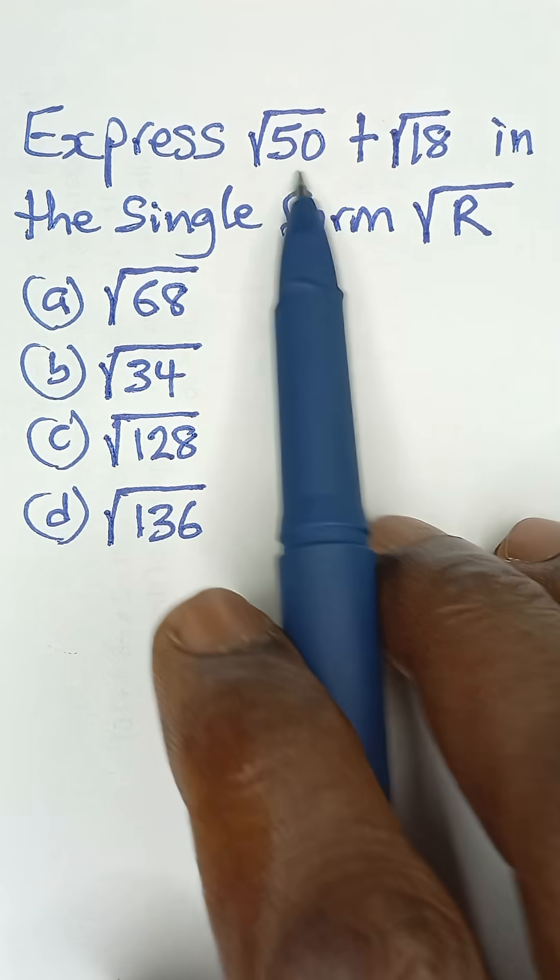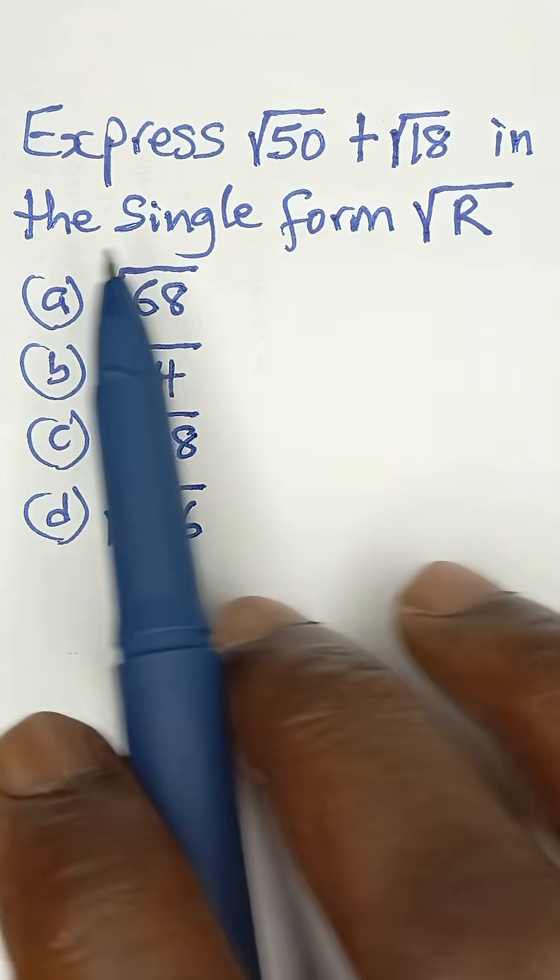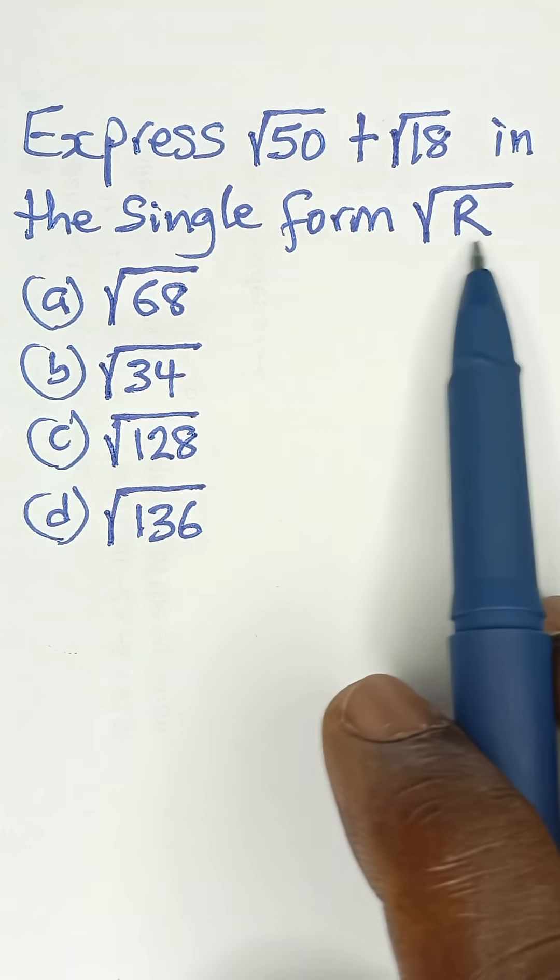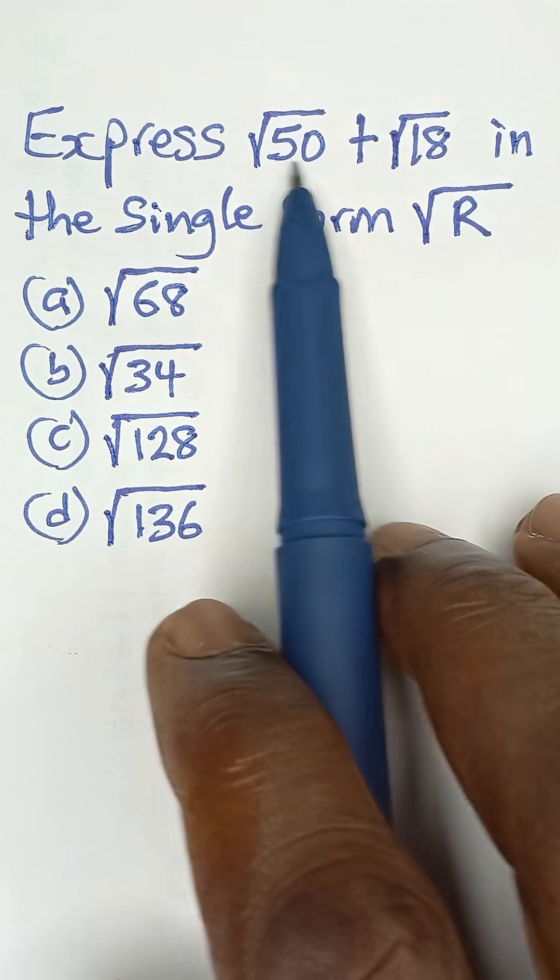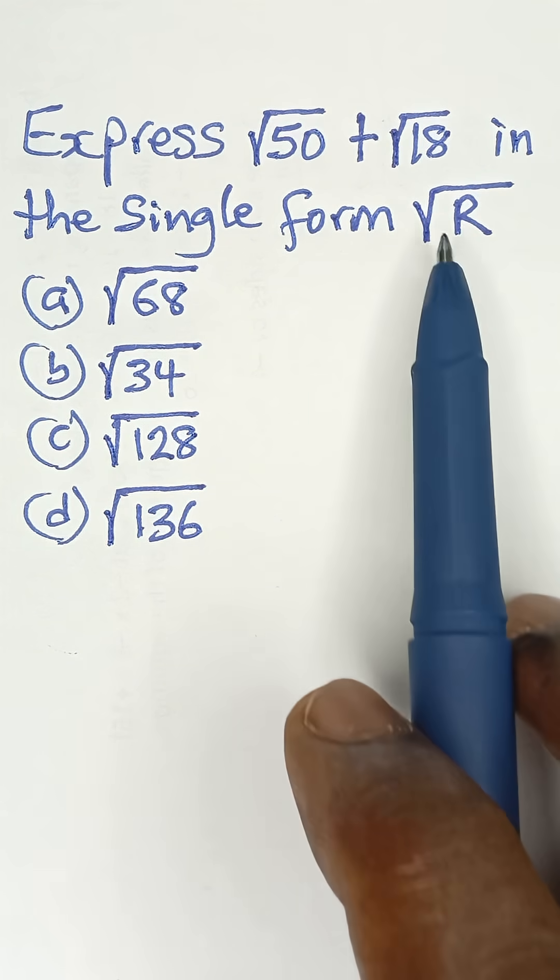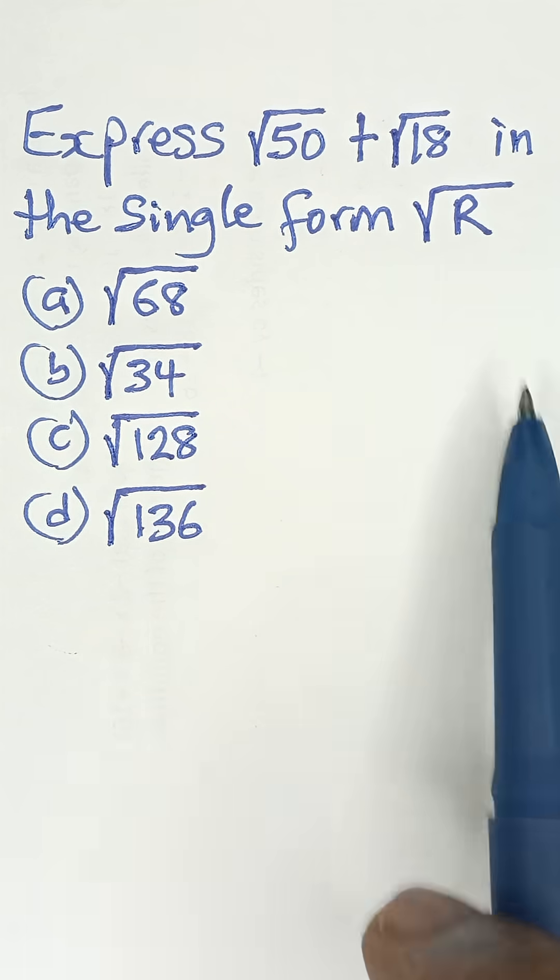Express root 50 plus root 18 in the single form root R. We're going to try and combine these two and obtain a single radical for them.